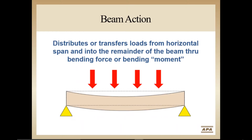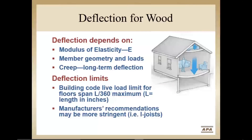A beam distributes loads across a horizontal span and transfers it into the supports. The beam resists this loading, typically from gravity forces, by bending. A bending moment is a measure of the amount of bending force in a given beam. As the load increases, the bending moment increases and deflection in the beam increases. Beam deflection depends upon the material's modulus of elasticity, or E-value. The greater the E-value, the less deflection for a given cross-section, span, and load.